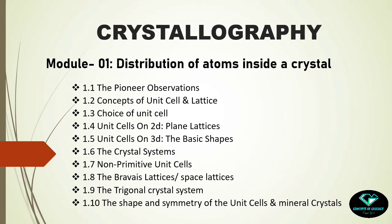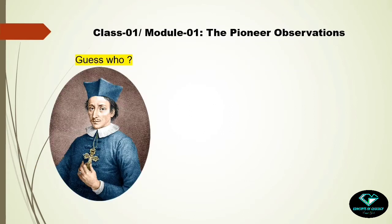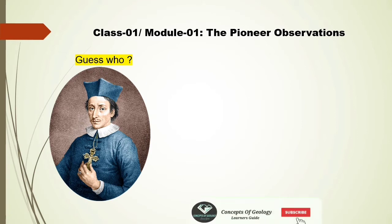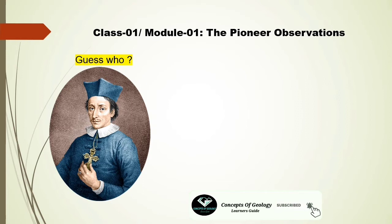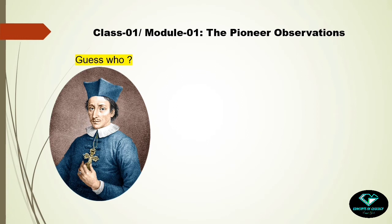We are now moving to the first class: the pioneer observations. Do you know the man in this picture? He was a Danish scientist in the 17th century who became a bishop later in life. In 1669, he studied a lot of quartz crystals and observed that the interfacial angles between two adjacent prism faces of the crystals are always 120 degrees, no matter how the crystals had formed. At that time there was no conception of periodic arrangement of atoms inside a regular solid. This concept is called the first law of crystallography, or the law of constancy of interfacial angles. Yes, he was Nicolaus Steno — the same person who postulated the fundamental laws of stratigraphy.